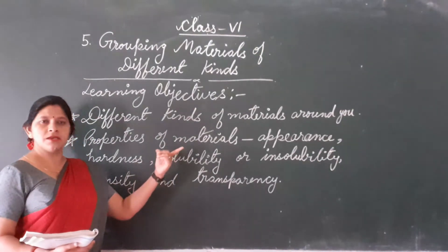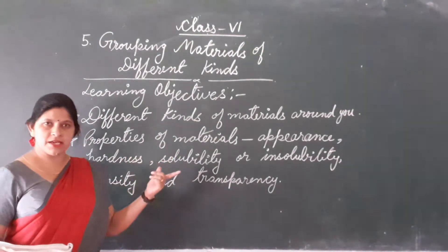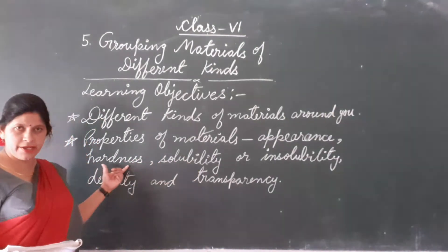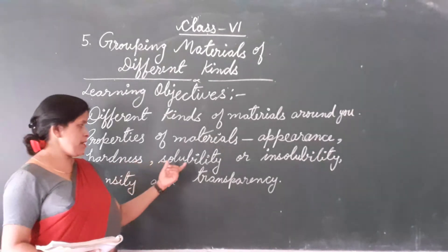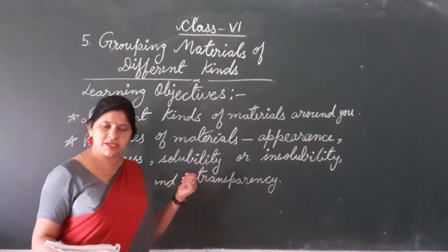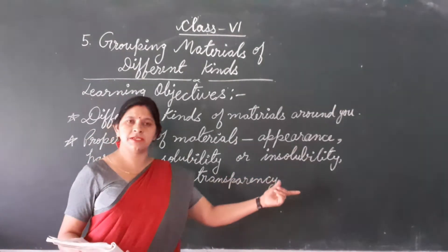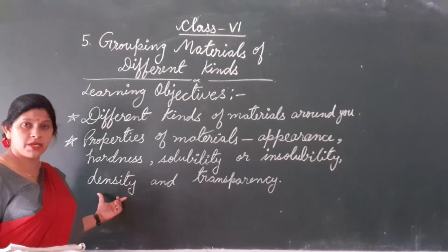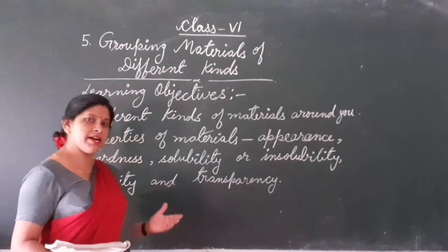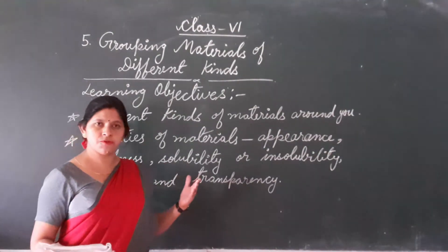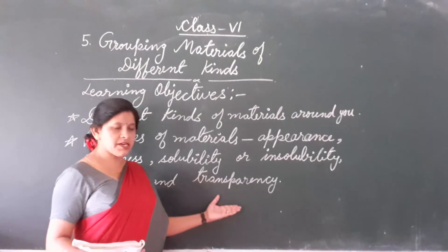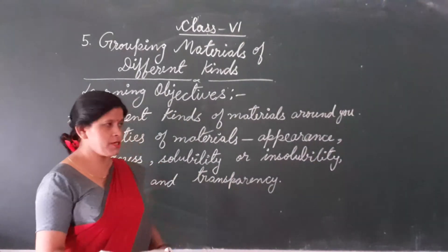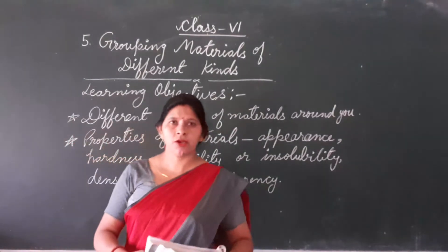The properties include appearance — what something looks like. Next is hardness, meaning how solid or hard a material is. Then solubility — substances that dissolve in water, and those that do not are called insoluble. Next is density, meaning how compact or thick a material is. And finally, transparency. In this chapter, we will learn about these two main points.